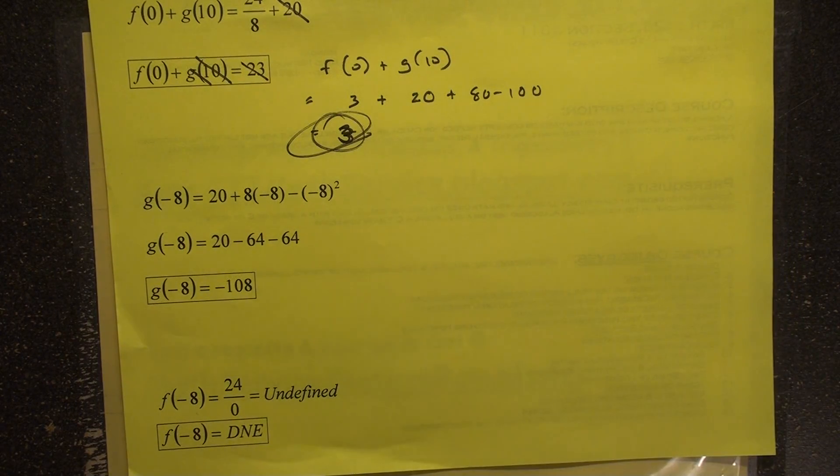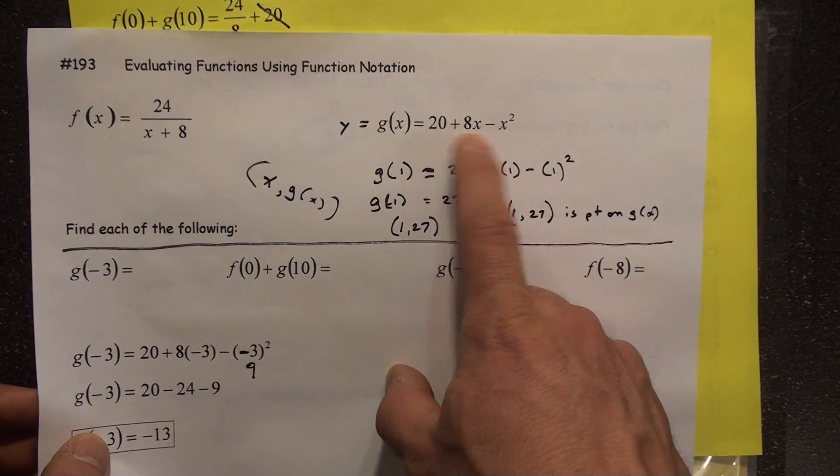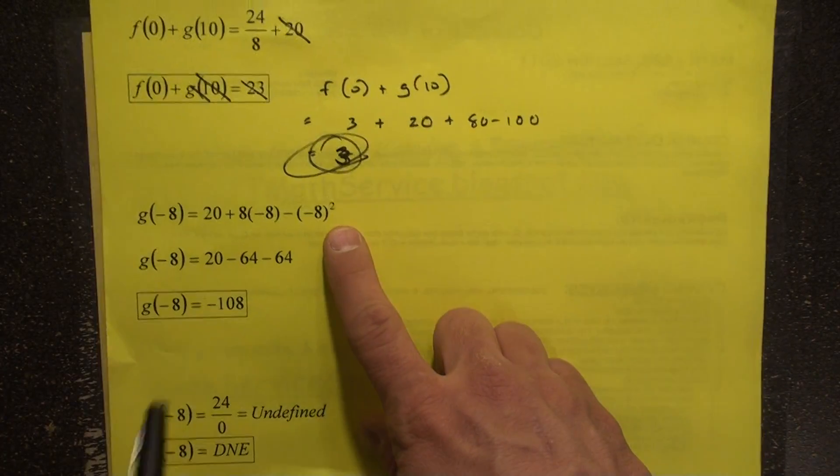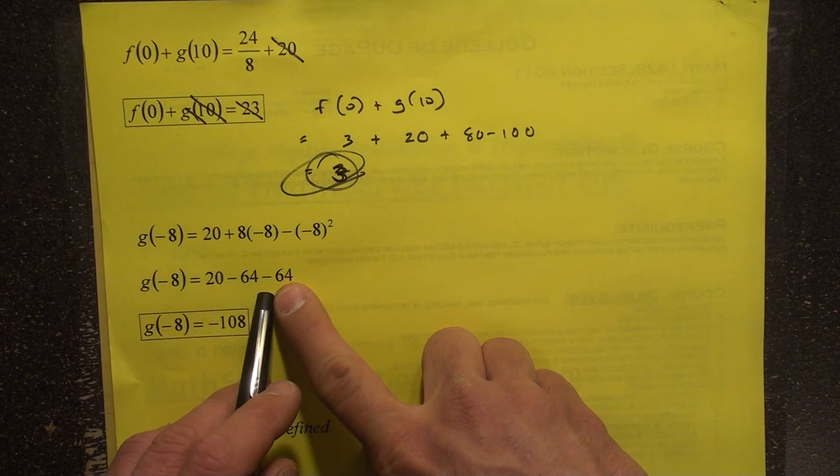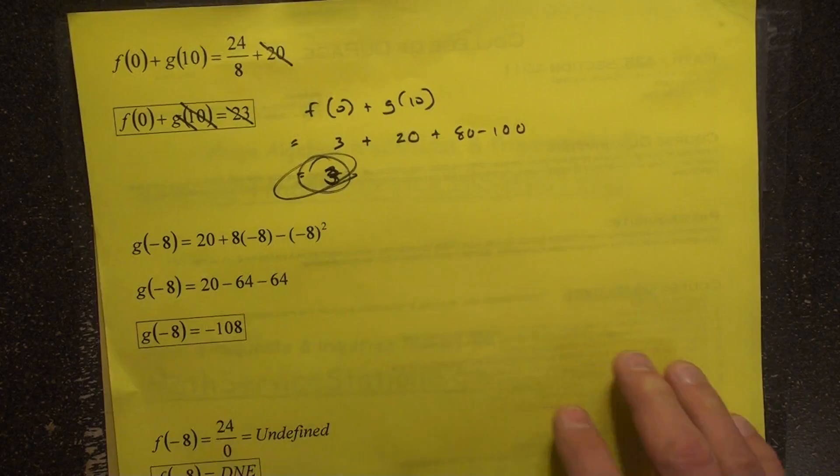Next one. g of negative 8. So we're going to plug a negative 8 in here. And the same kind of thing is going to happen. So we're just kind of double checking here, making sure we got this. This ends up being negative 128 plus the 20 negative 108.